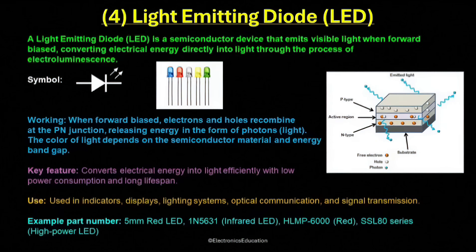Because of their high efficiency, long life, and compact size, LEDs are used in countless applications. They are widely used as indicator lights on electronic devices, in seven-segment displays, and as light sources in modern lighting systems, including bulbs, tube lights, and decorative lighting. In addition, they are used in automotive headlamps and brake lights, traffic signals, street lighting, and backlighting for LCD screens.